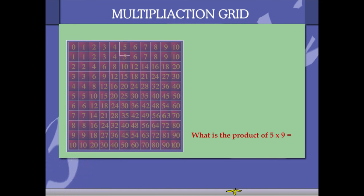So 5 in the top line left to right, and 9 in the vertical line top to bottom. Where they meet is the answer, that is 45. Similarly, you have the product of 3 and 8. Select 3, go down.